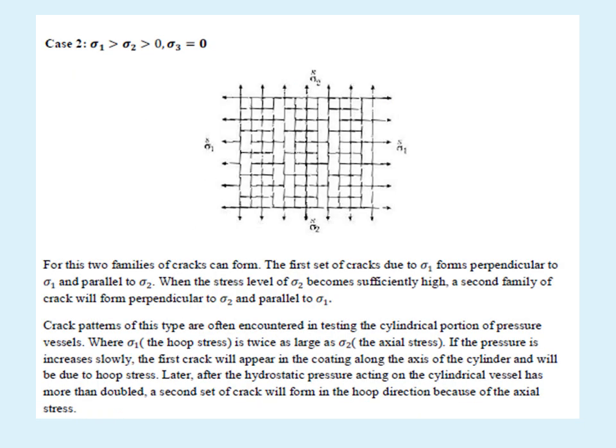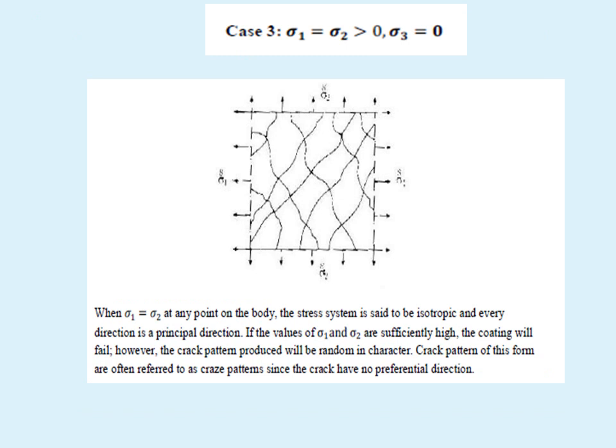If σ₁ > σ₂, both are greater than 0 and σ₃ = 0, here some cracks will be in the σ₁ direction and also there will be cracks in σ₂ direction. If σ₁ = σ₂, both are greater than 0 and σ₃ = 0, the cracks will be in the craze patterns, there is no different direction of the cracks in this case.